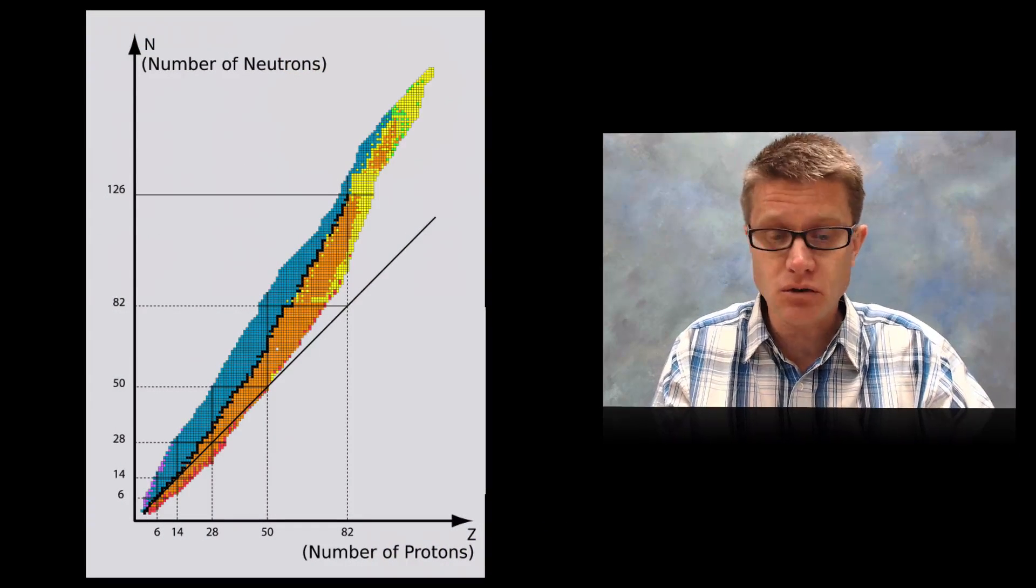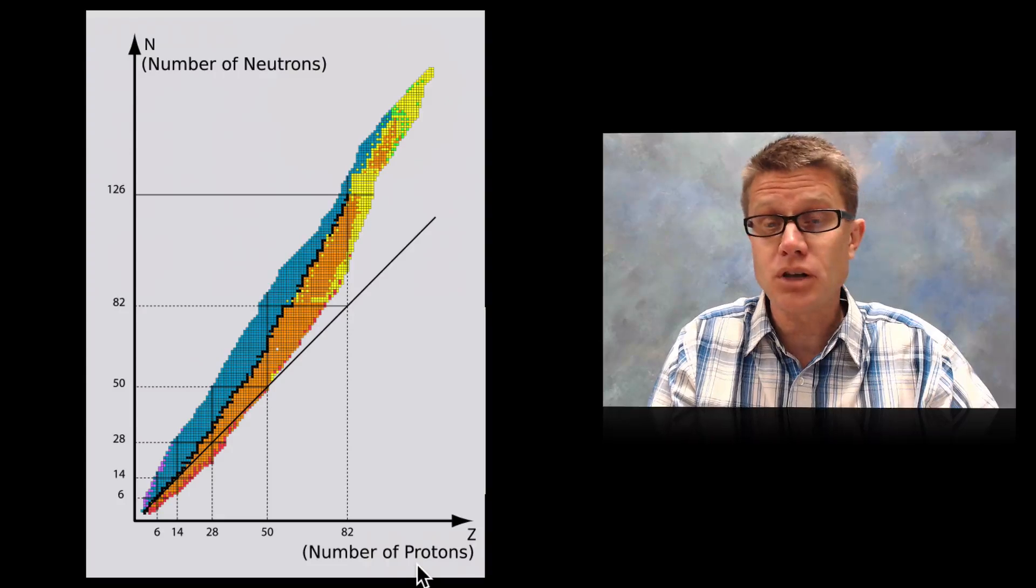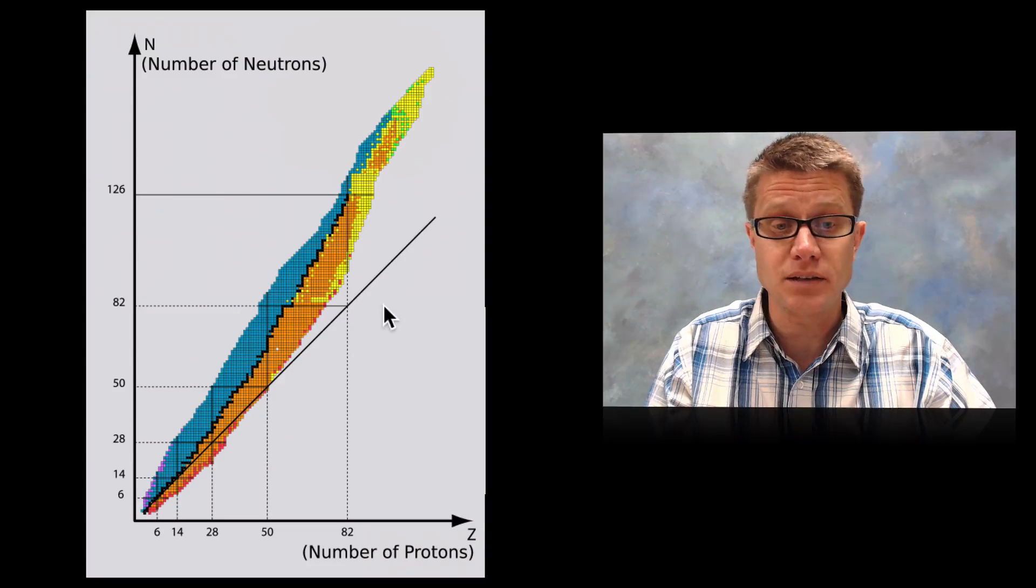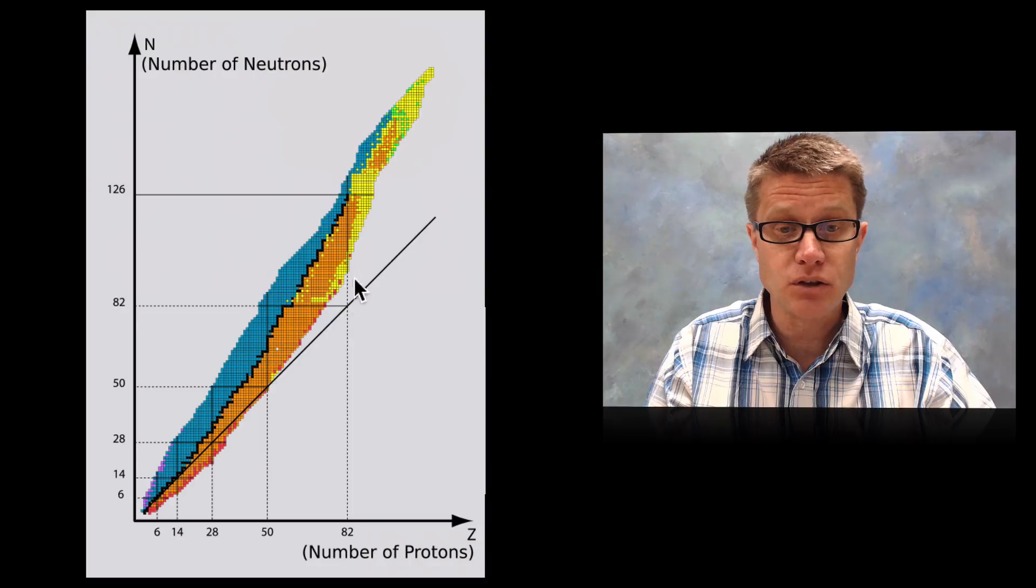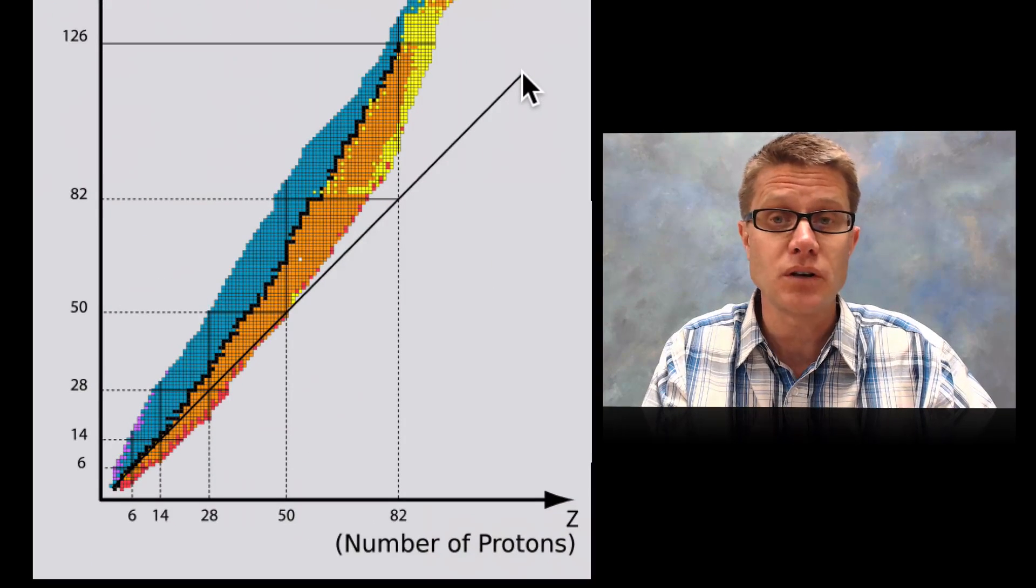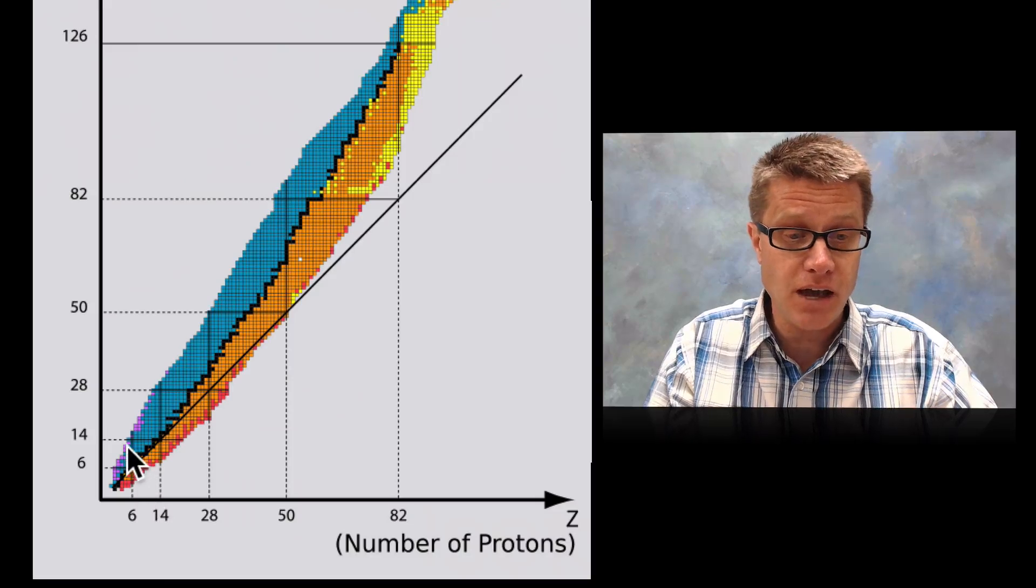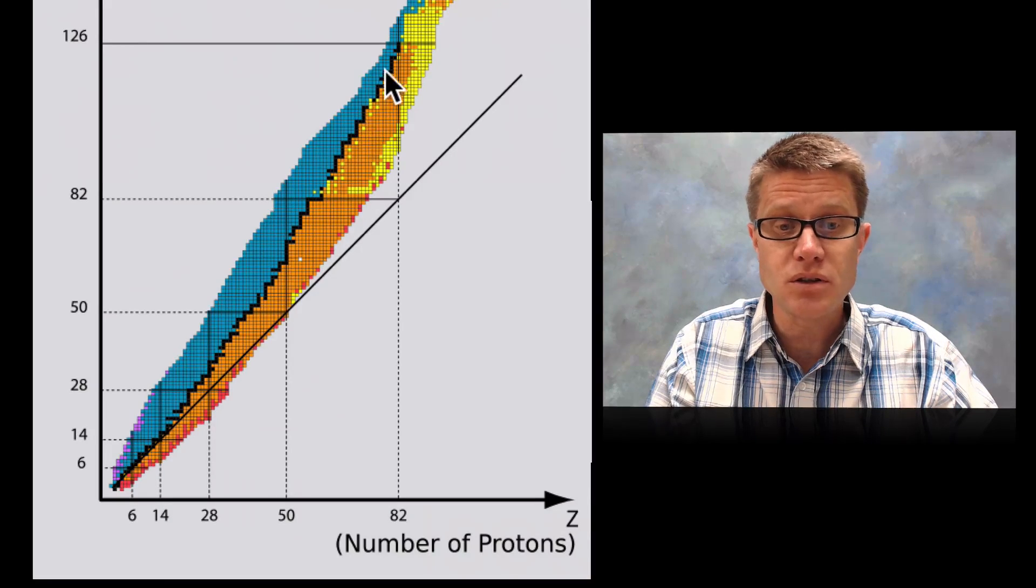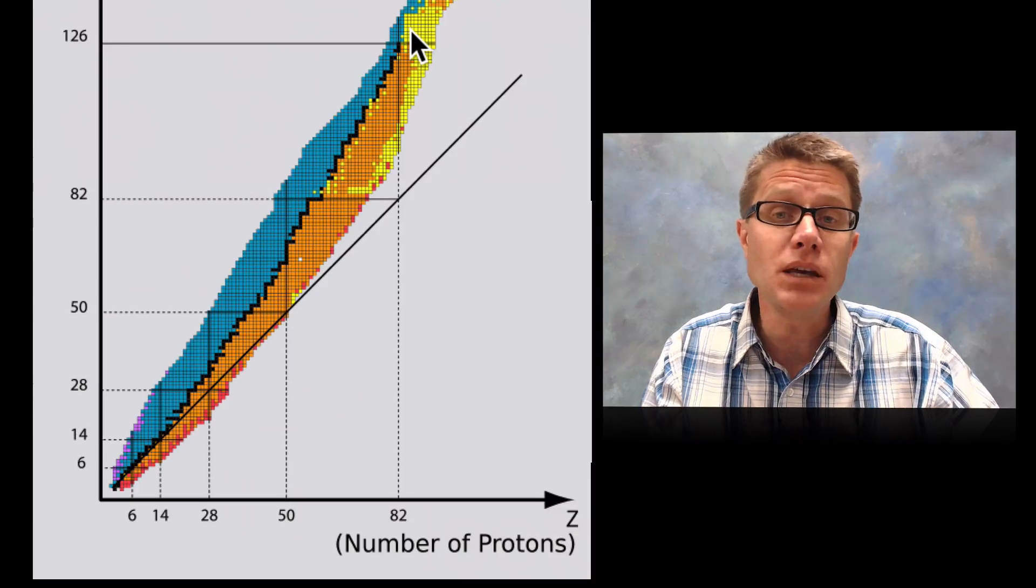Now if we look at this graph right here, this is graphing the number of protons along the x axis and the number of neutrons along the y axis. And so this would be that virtual straight line if the number of protons and the number of neutrons are equal. And you will find right here the average, which is this jagged line right here, starts to drift towards the neutron side. What does that mean?